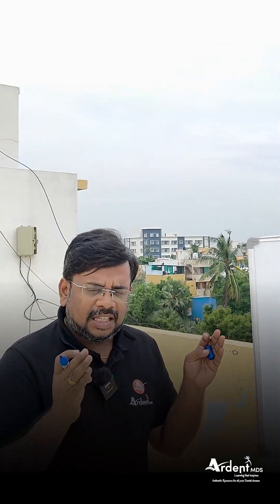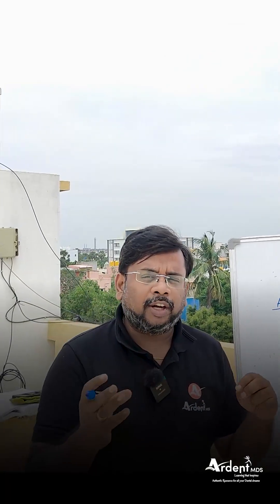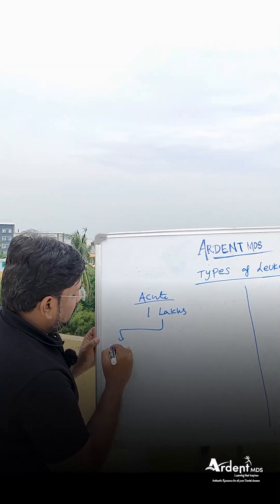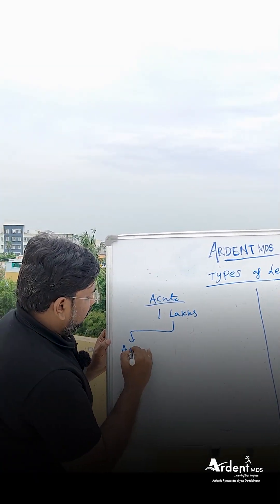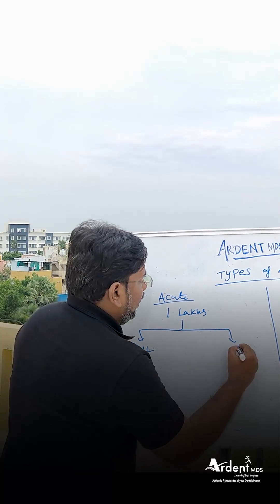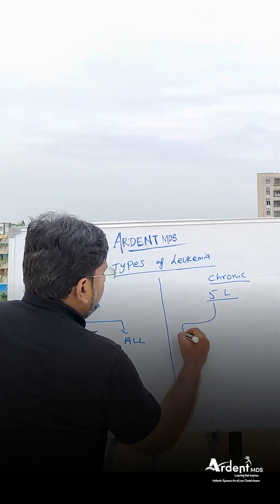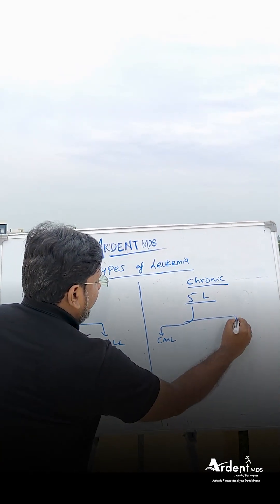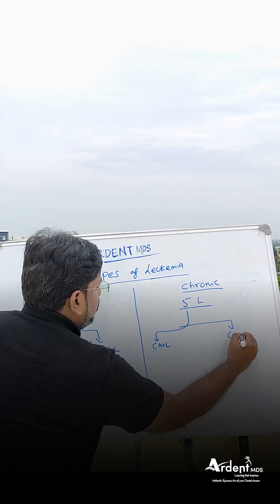Acute and chronic each divide into two types: acute myeloid (AML), acute lymphoid (ALL), chronic myeloid (CML), and chronic lymphoid (CLL). So let us go through what is AML, ALL, CML, and CLL.